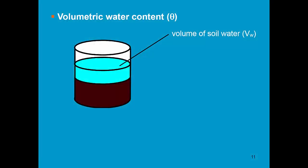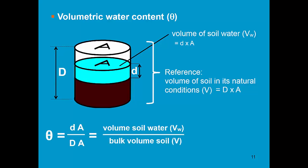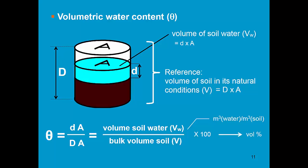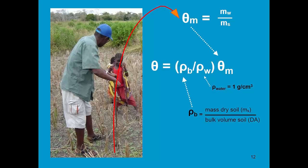If we express the soil water content on a volume basis, we express the volume of the soil water with reference to the volume of the soil sample from which the water is extracted. The volumetric water content, theta, is the volume of the soil water over the bulk volume of the soil. This is expressed as cubic meters of water per cubic meter of soil. If we multiply by 100, we express it as a volume percentage. The volumetric water content is obtained by multiplying the mass water content with the ratio of the bulk density to the density of water.